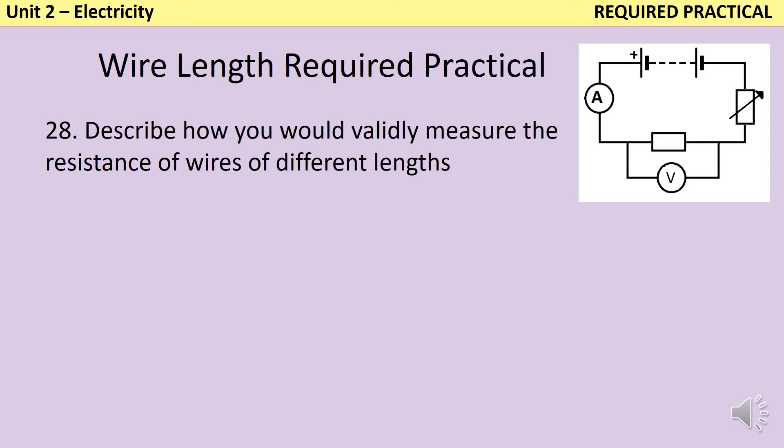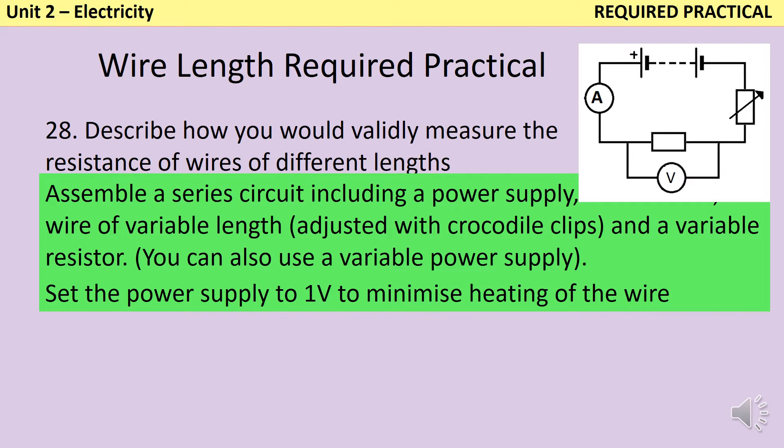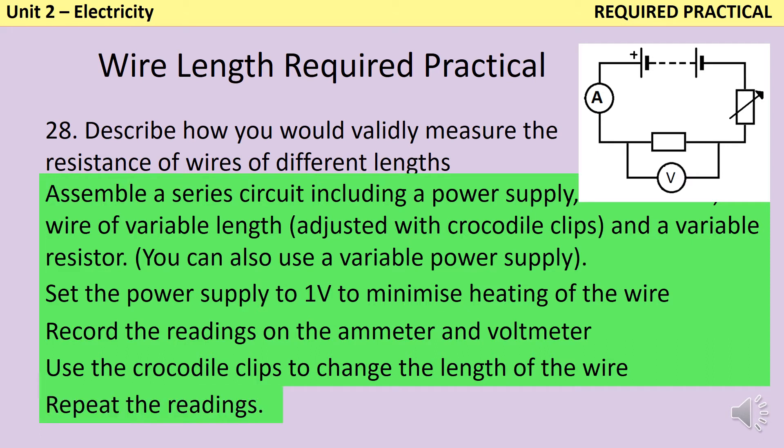Your first step is to assemble the circuit like this and you determine the length of the wire using some crocodile clips. So you want one very long piece of wire that you can set to a particular length by moving those crocodile clips, and this will ensure that the diameter of the wire and the material that the wire is made from stay the same, as these are important control variables for your investigation. You then want to set the power supply as low as you can, so something like one volt, because you want to minimize heating of the wire. Then you use the ammeter and the voltmeter to record the readings. Then you can change your independent variable, which is the length of the wire, so you move the crocodile clips in order to change its length and then you repeat the readings.